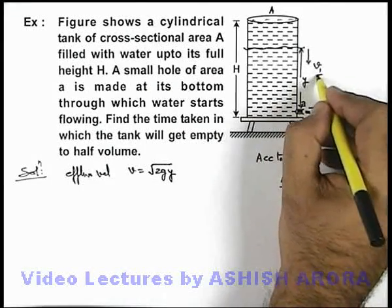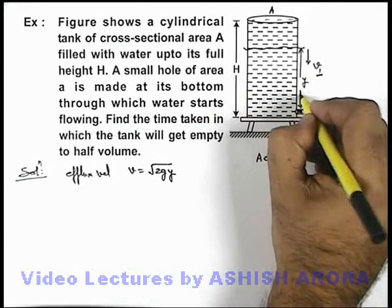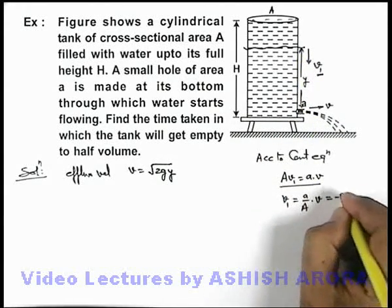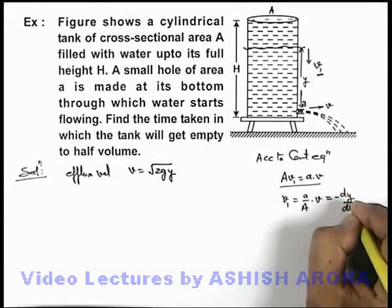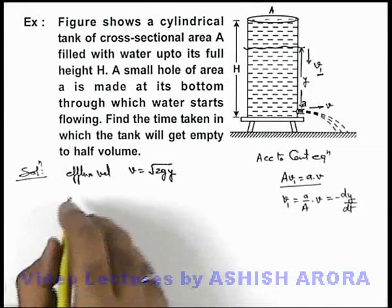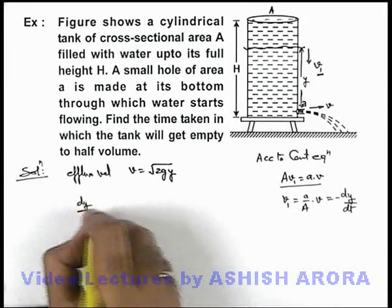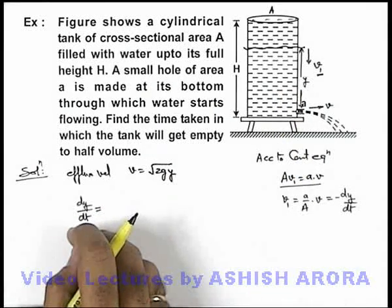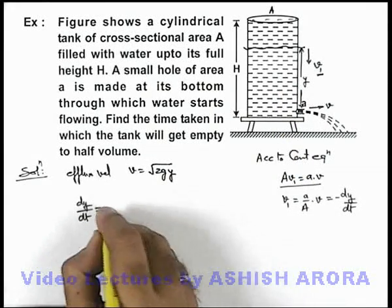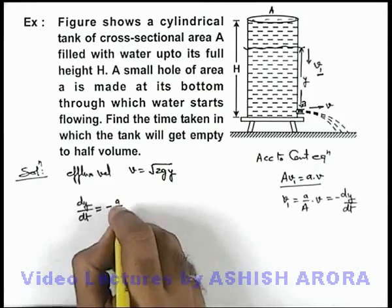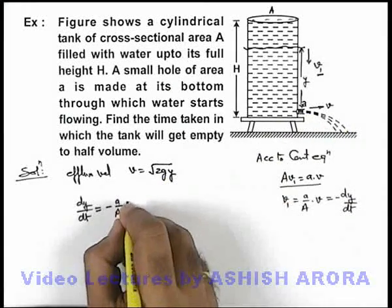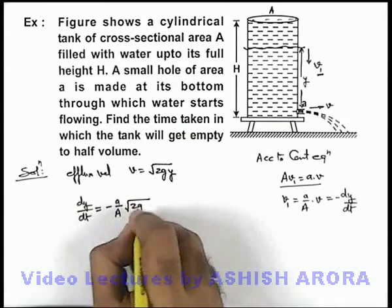This v1 is basically negative of the rate at which y is decreasing, so this can also be written as -dy/dt. In this situation, we can write the value of dy/dt as the rate at which this height of water level is changing: it is negative of (a/A) into the velocity with which fluid is being ejected, which is root 2gy.